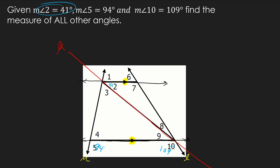Right off the bat, we can find angle 4, because if we put angle 4 and angle 5 together, they form a linear pair — supplementary, adding up to 180°. So 180 minus 94 gives us angle 4 as 86°. That's in the top right corner position. The only other top right corner angle is angle 1 up here — those two are corresponding angles of parallel lines — so angle 1 is also 86°.